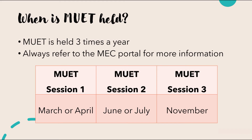So when is MUET held? MUET is normally held three times a year. During the pandemic, there have been some massive changes in dates, with a lot of shifting and postponements. All changes in test dates can be found on the MEC portal, so once you have registered for MUET, visit the portal often so you don't miss any updates. Under normal circumstances, MUET is held in three sessions: Session 1 in March or April, Session 2 in June or July, and Session 3 in November.